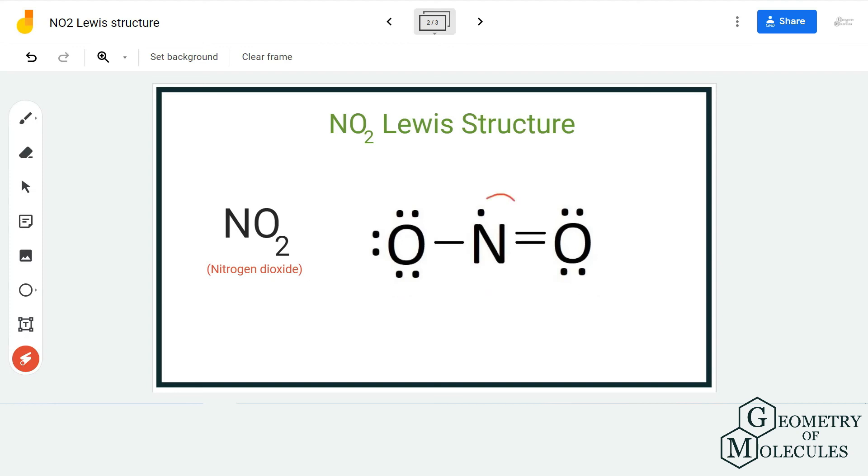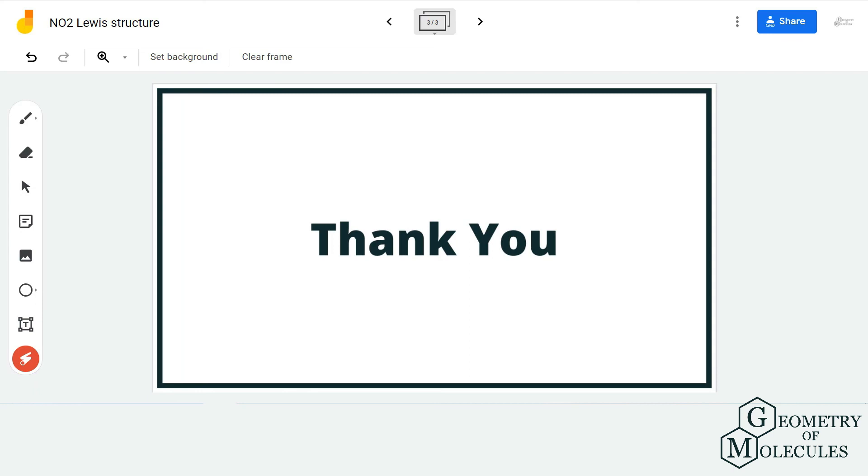This is the Lewis structure of NO2 in which nitrogen atom forms a double bond with an oxygen and a single bond with another oxygen. This is the Lewis structure of NO2 and I hope this video helps you to understand that.